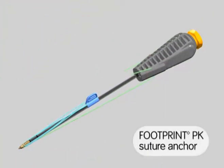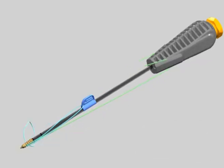While holding the footprint anchor inserter handle, push the suture threader tab forward towards the anchor, releasing the suture threader loop.